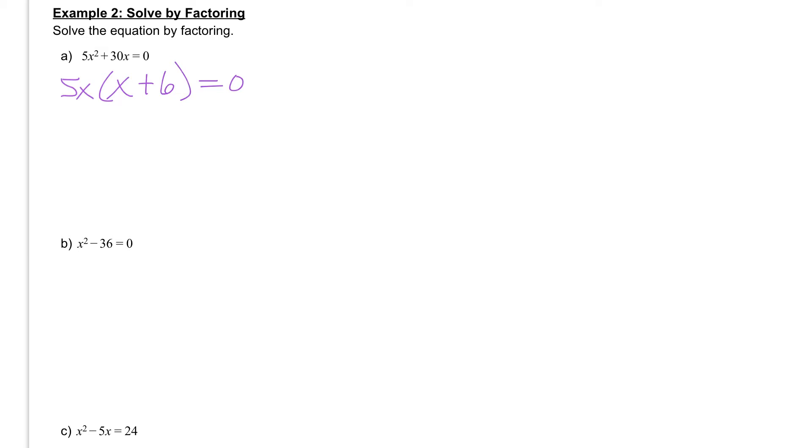Once I factored it, now I can do what I did in the first example. At this point, I would take the 5x and the x + 6 and set them both equal to zero. So I'm going to take 5x and set that equal to zero, or x + 6 and set that equal to zero.